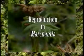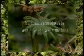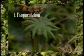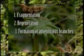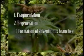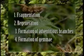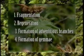Marchantia is reproduced by vegetative and sexual means. Vegetative reproduction takes place in many ways: fragmentation, regeneration, formation of adventitious branches, and formation of gemmae.